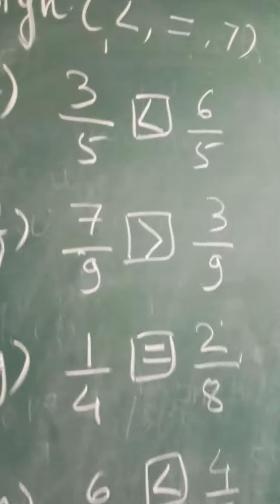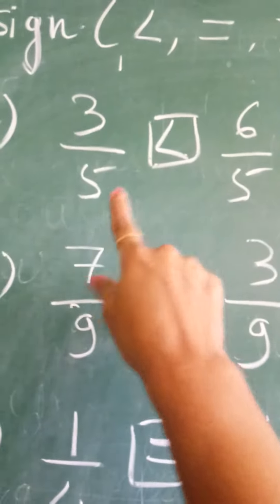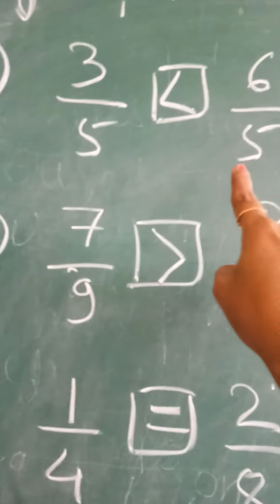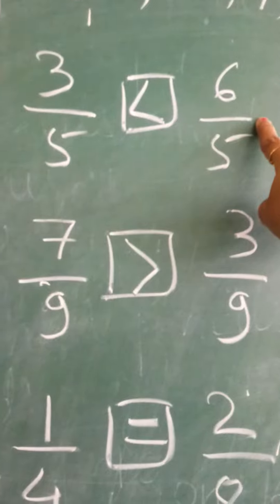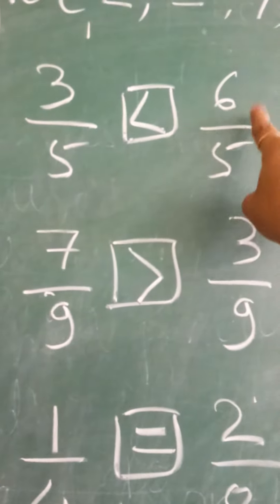Then 3 upon 5, 6 upon 5. Again cross multiply: 5 threes are 15, 5 sixes are 30. 30 is on this side, so this fraction will be greater.